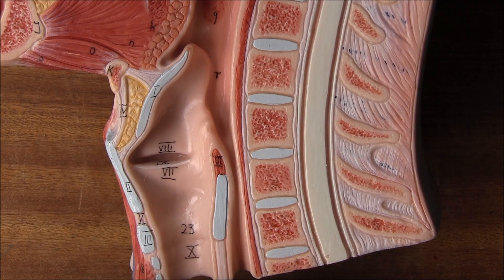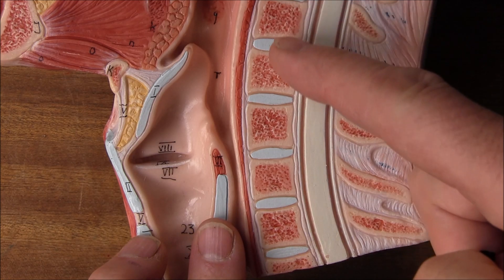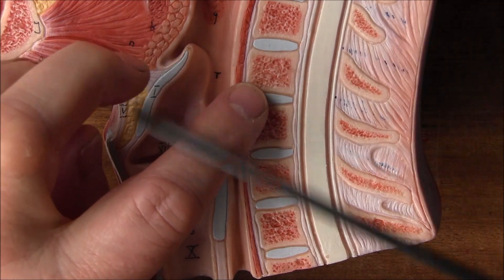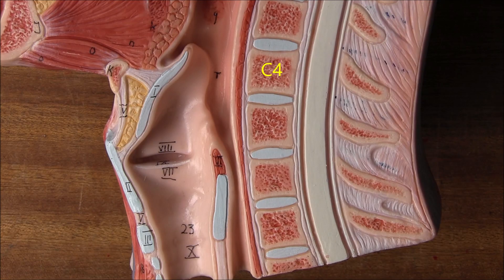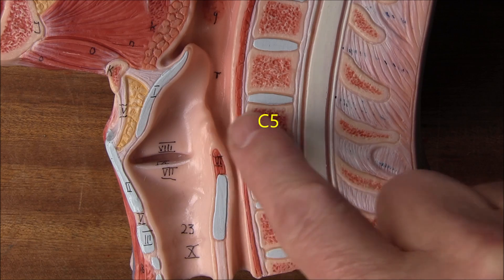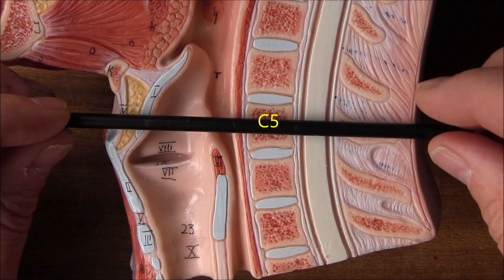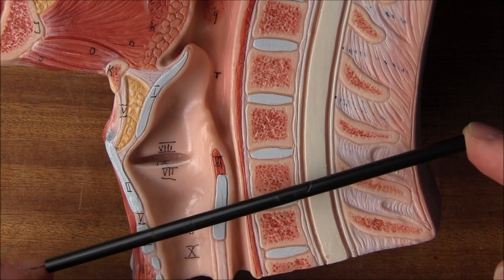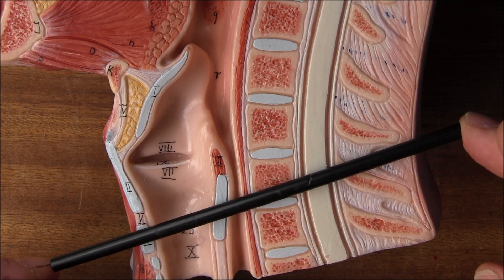At birth the cricoid ring is at about C4. By age six, the cricoid ring has moved down to the level of C5. And as illustrated in this adult model, in the adult it is around about the level of C6.